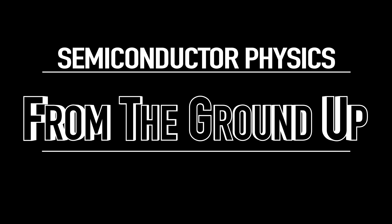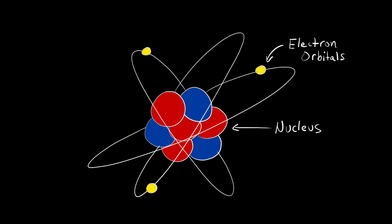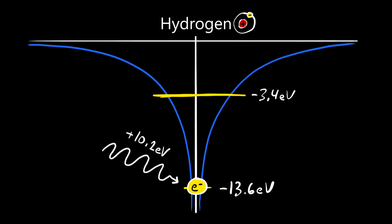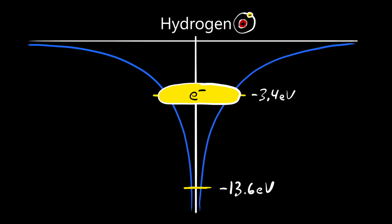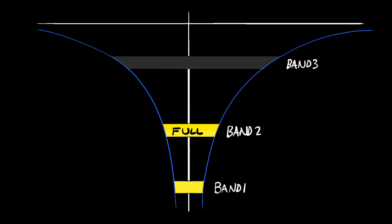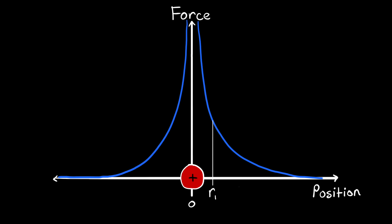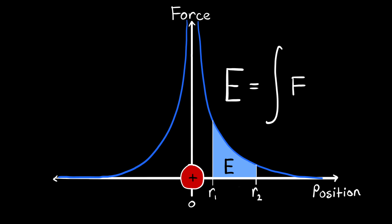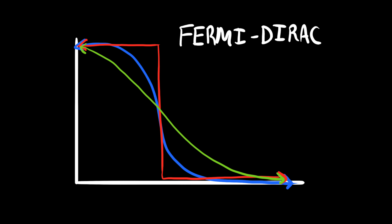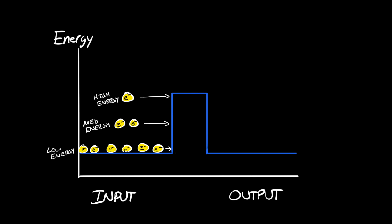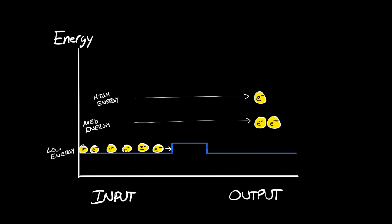Semiconductor physics from the ground up. Today, I want to start at the beginning and explain how the basic properties of the atom give rise to the most fundamental feature of any semiconductor: the bandgap. Specifically, I'm going to cover how electrons behave in classical and quantum mechanics, how electron energy applies to individual atoms and to solids, how energy bands and bandgaps arise and relate to conductivity, and how electron energy distribution is fundamental to semiconductor device operation.